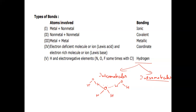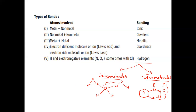For intramolecular hydrogen bonding, the bonding is present within the molecule. Consider ortho-nitrophenol. Phenol consists of an OH group, and at the ortho position, we have a nitro group. Here, hydrogen is directly attached to the oxygen atom, and the same hydrogen makes a hydrogen bond with the oxygen attached to the nitrogen group. This type of hydrogen bonding is known as intramolecular, taking place within the molecule.